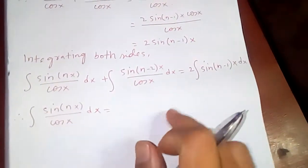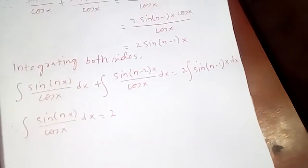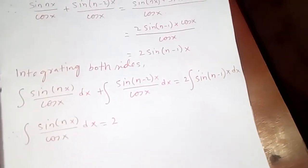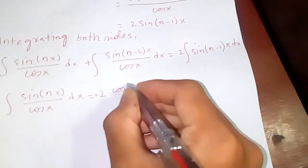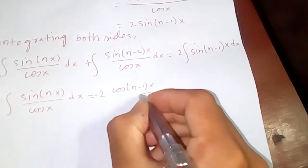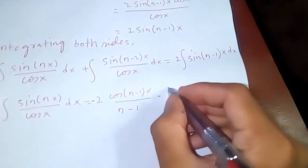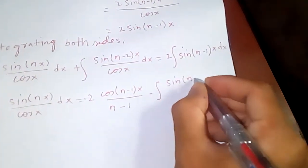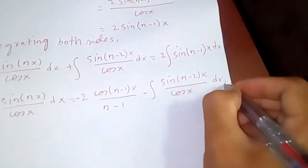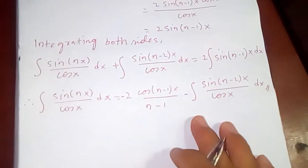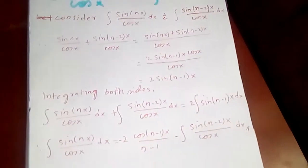Now, just a little simplification. The integral of sin^n(x) over cos(x) dx — let's transfer the second term on the right-hand side. The integration of sin is minus cos, so we get minus cos^(n-1)(x) divided by (n-1), minus the integration of sin^(n-2)(x) over cos(x) dx. And this is our reduction formula for this integral.